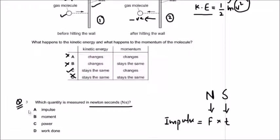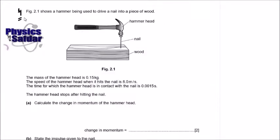Question number four. A hammer is used to drive a nail into a piece of wood. The mass of the hammer head is 0.15 kilograms. The speed of the hammer head when it hits the nail is 8.0 meters per second. The time for which the hammer head is in contact with the nail is 0.0015 seconds. The hammer head stops after hitting the nail. Calculate the change in momentum of the hammer head.